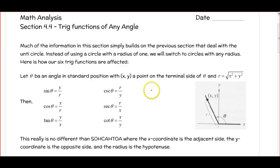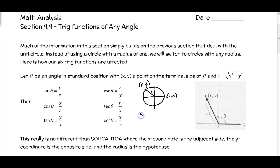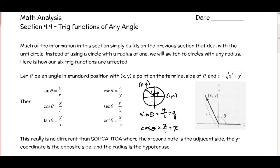Let's just review for a second here. When we had our unit circle and I had some point x, y on the unit circle, this point here was (1, 0), which means our radius was 1. The sine of our angle theta simply turned out to be y over 1, or just y. And the cosine of the angle turned out to be x over 1, which is just x. So it really simplified down to the x and y coordinates for sine and cosine.